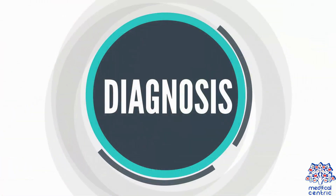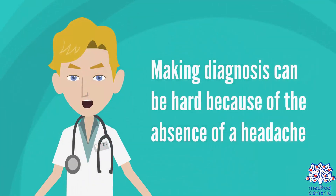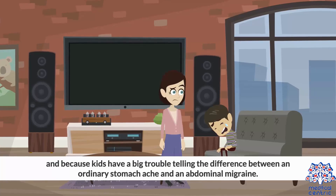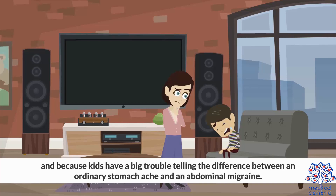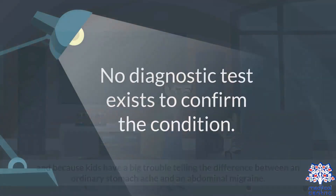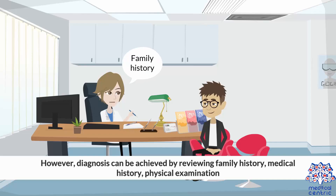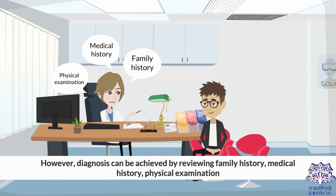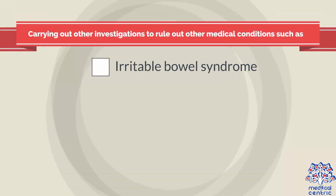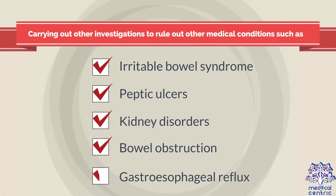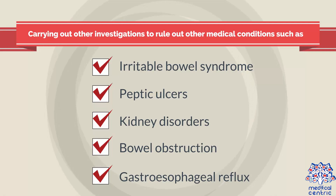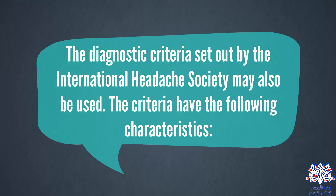Making a diagnosis can be hard because of the absence of a headache and because kids have trouble telling the difference between an ordinary stomach ache and an abdominal migraine. No diagnostic test exists to confirm the condition. However, diagnosis can be achieved by reviewing family history, medical history, physical examination, and carrying out other investigations to rule out other medical conditions, such as irritable bowel syndrome, peptic ulcers, kidney disorders, bowel obstruction, and gastroesophageal reflux.